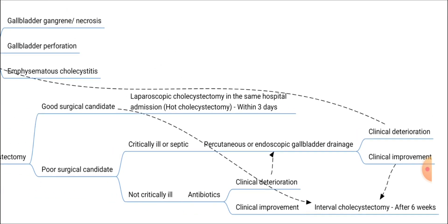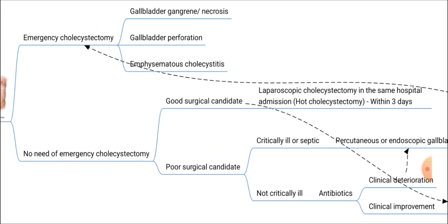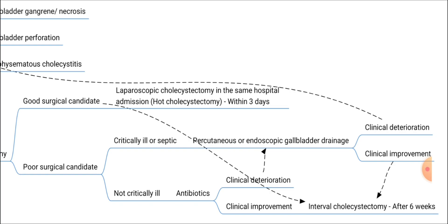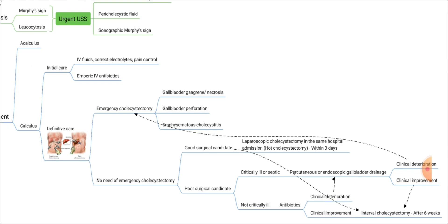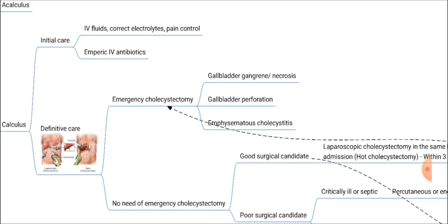In resource-poor settings, even when a patient with acute cholecystitis is a good surgical candidate and has no indication for emergency cholecystectomy, due to poor resources we sometimes plan interval cholecystectomy after six weeks. To summarise the management algorithm: start with initial care — resuscitation, IV fluids, electrolyte correction, pain control, and empiric IV antibiotic therapy — then proceed to definitive care.